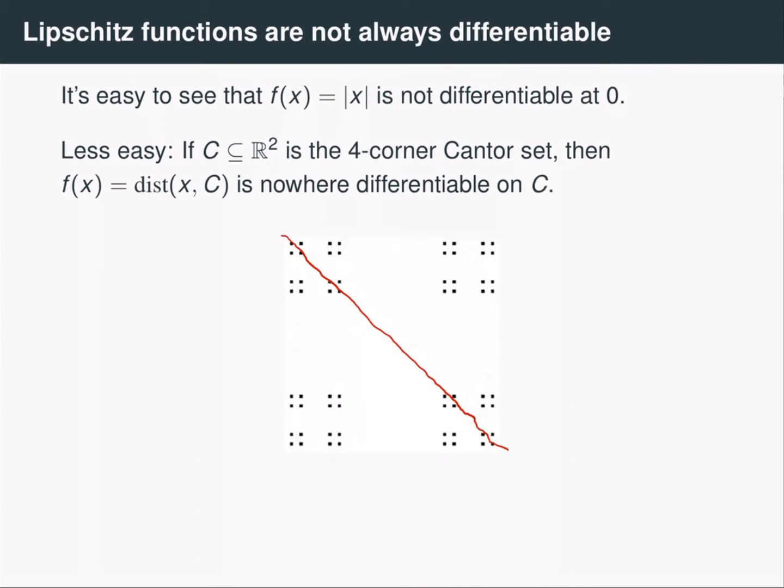Now if we zoom in, if we start zooming in at points on the Cantor set, we're going to see just another copy of the Cantor set. And so the distance function is going to look a lot like itself at this scale. And so we can see that as we're zooming in on the Cantor set, the distance function is not looking more and more affine.